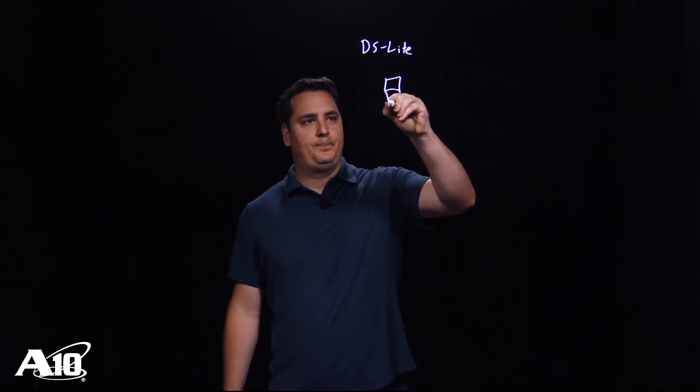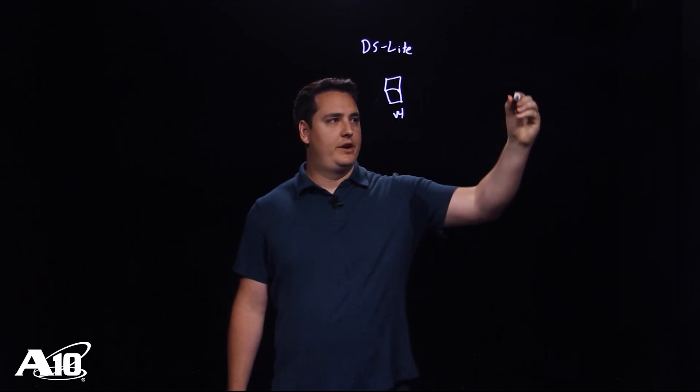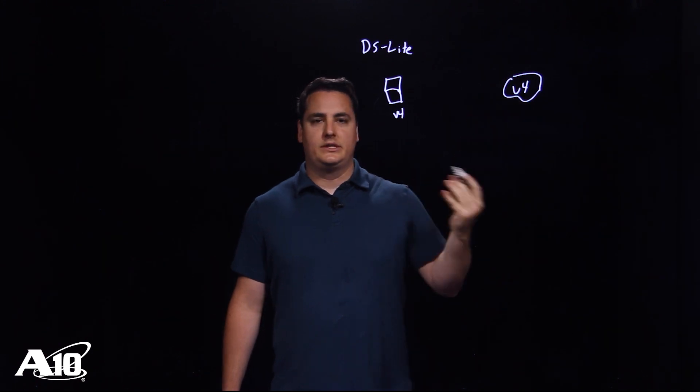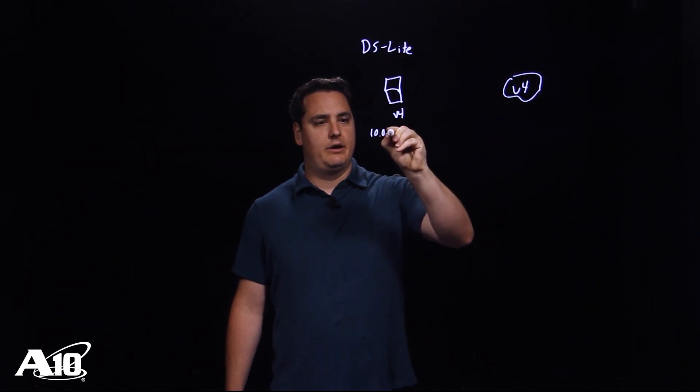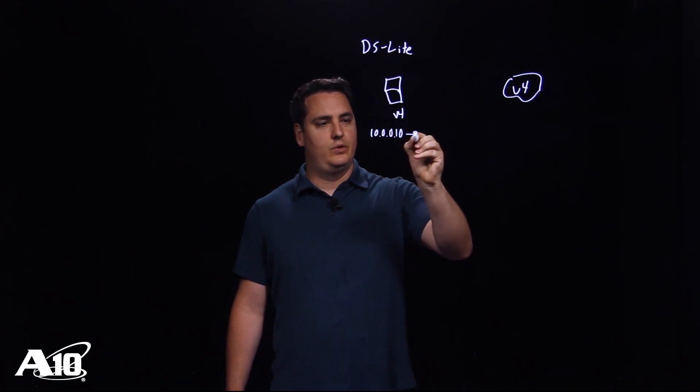So we have a legacy client here that is v4 only. It wants to talk to the v4 internet over here. We'll say for example he wants to talk to the Google public DNS. So this guy is 10.0.10 and he wants to talk to 8.8.8.8.